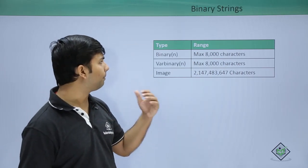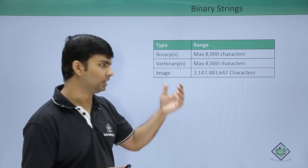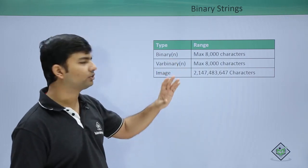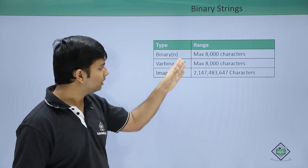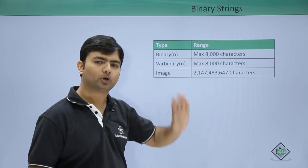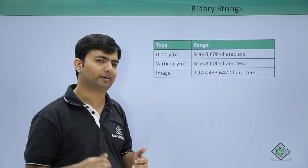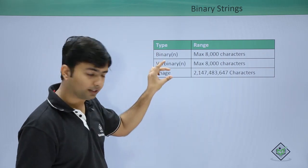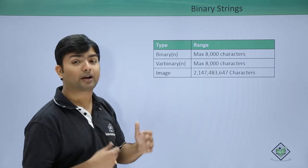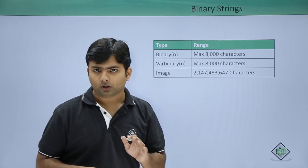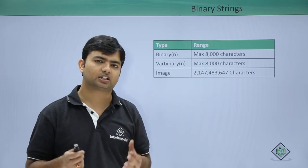Now let's talk about binary strings. If you want to store something in binary, like an image or other file data, you can store it in binary form. When using binary or varbinary, you pass the size, and the maximum is up to 8000 characters. The difference between binary and varbinary is exactly like char and varchar — fixed-length vs variable-length. Image allows you to store a larger maximum of binary characters. These are the data types using which we can store different types of information in our SQL Server database.